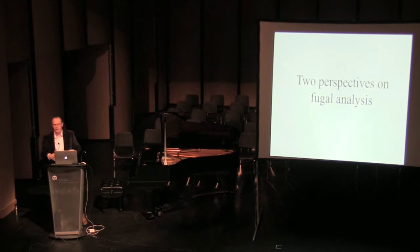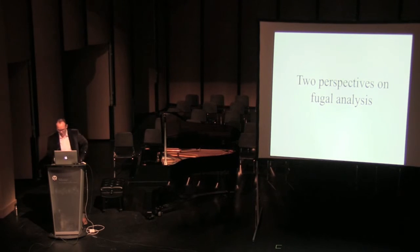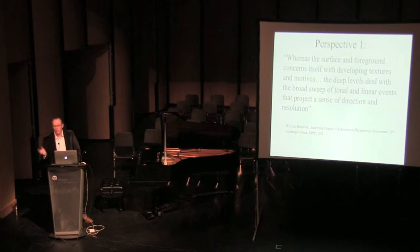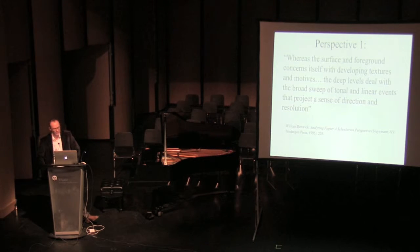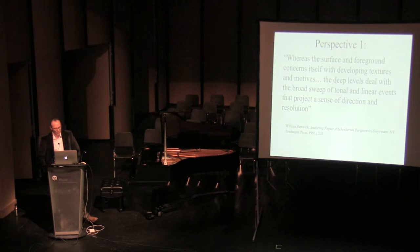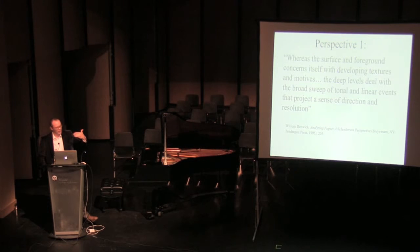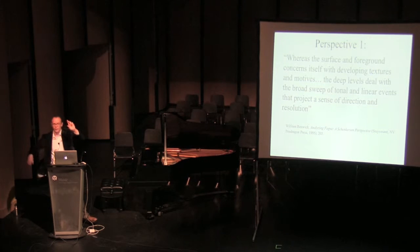Now that we have a basic idea of what Schenkerian theory and harmonic function are, let's look at two perspectives on fugal analysis. Starting with a top-down perspective — Perspective 1 is by William Renwick from his book 'Analyzing Fugue: A Schenkerian Perspective.' He says: 'whereas the surface and foreground concerns itself with developing textures and motives, the deep levels deal with the broad sweep of tonal and linear events that project a sense of direction and resolution.' Renwick is really focusing on the top-down nature of Schenkerian theory, looking at structural levels projected from the prototype down to the musical score.